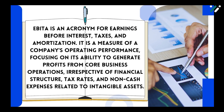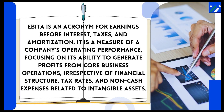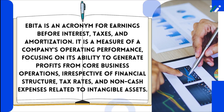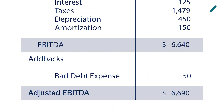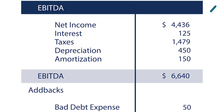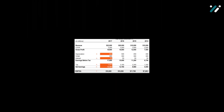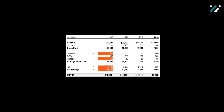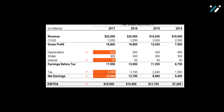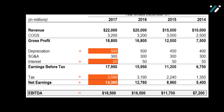The components of EBITDA are as follows. Earnings: this refers to the net income or profit generated by a company. Before interest: EBITDA excludes interest expenses, providing a clearer picture of operating performance without the impact of the cost of debt. Before taxes: EBITDA also excludes taxes, isolating the operating profit from the influence of tax rates.